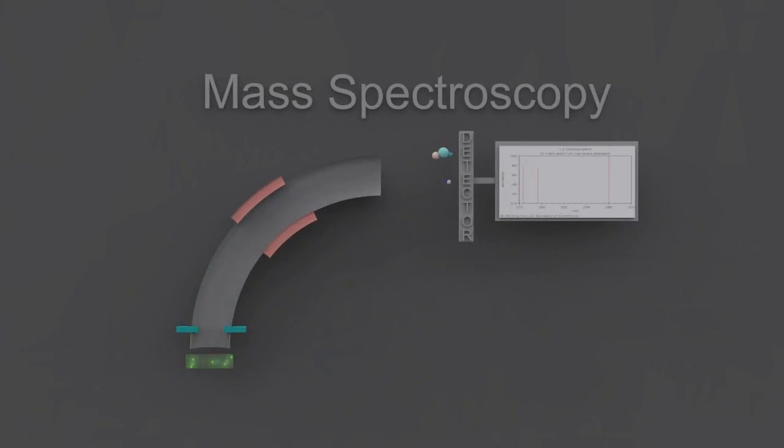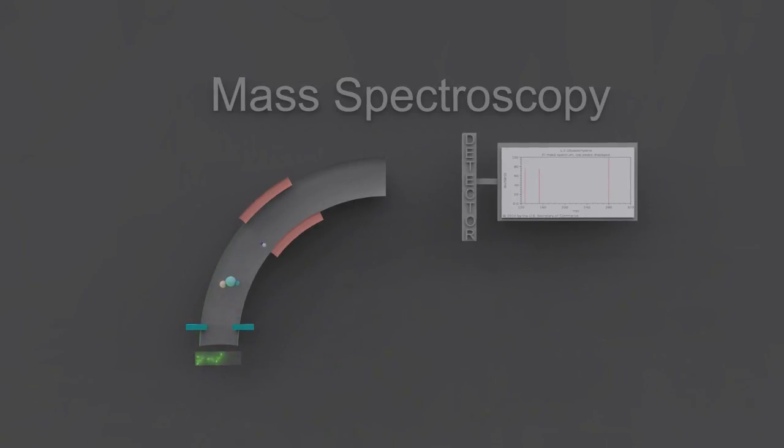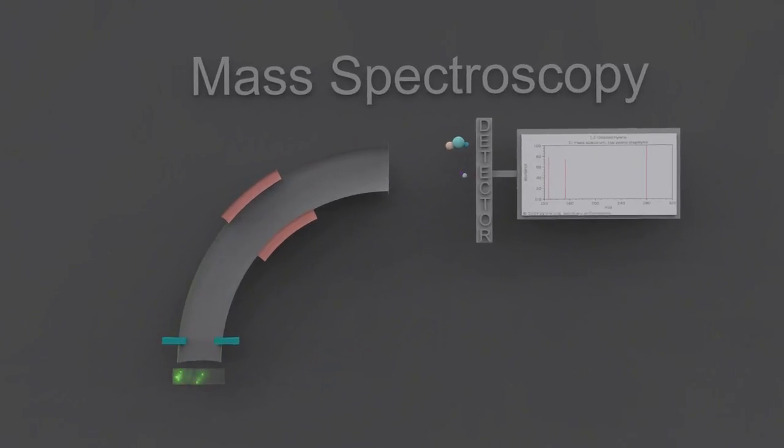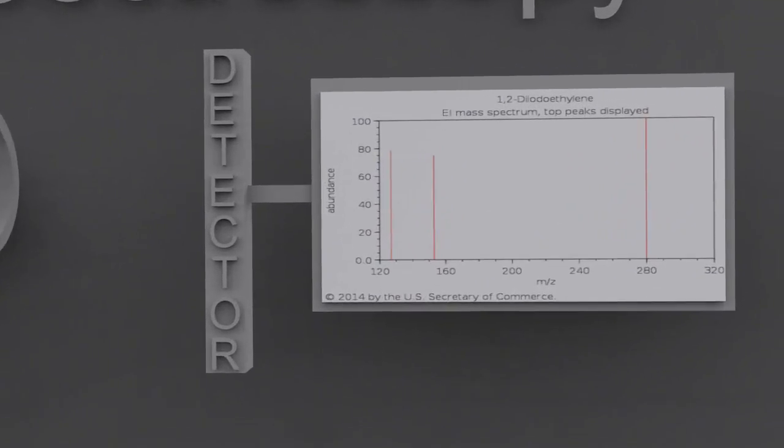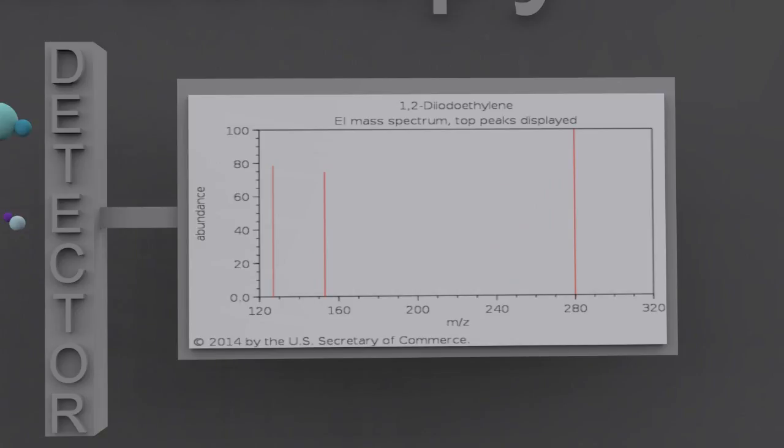And just to complete the set, we have mass spectroscopy which doesn't use electromagnetic radiation in the traditional sense. Molecules are ionized and flung through a bent tube. Different masses and charges on the fragments produce a spectrum such as this, and using simple maths you can work out what the fragments are and identify the molecule.